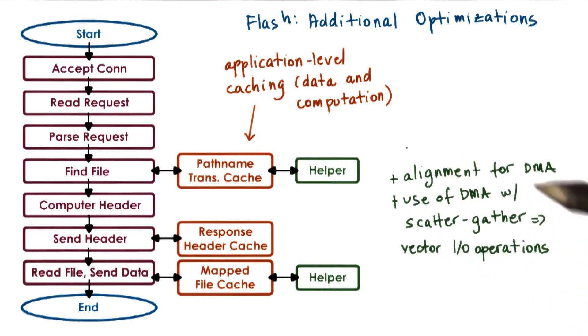Flash also does optimizations that take advantage of the networking hardware and network interface card. For instance, all data structures are aligned to easily perform DMA operations without copying data.